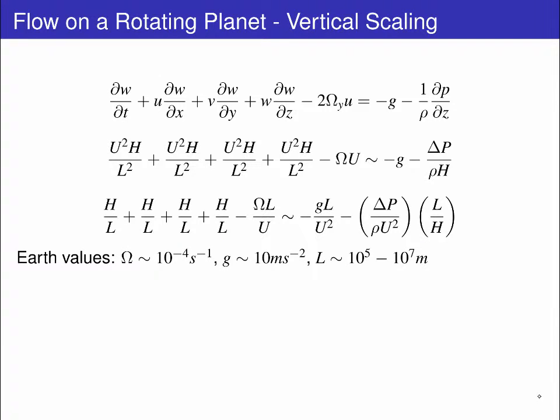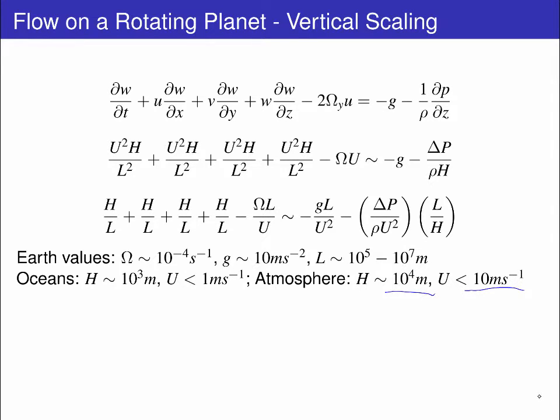Let's consider some typical Earth values for these scales. Omega is 10 to the minus 4 radians per second. Gravity is 10. For the ocean, an ocean basin or an atmosphere system is between hundreds of kilometers up to the circumference of Earth. For the ocean, the vertical scale is kilometers with typical velocities under a meter per second, while for the atmosphere it is tens of kilometers deep, with typical velocities up to tens of meters per second.